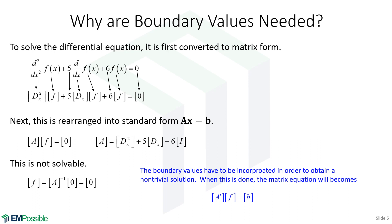When we incorporate the boundary values, instead of having a zero on the right-hand side of the matrix equation, we now have a column vector that's mostly zeros but has numbers at the boundary values. This becomes solvable, and we've also modified the matrix A in order to do that.